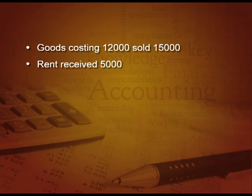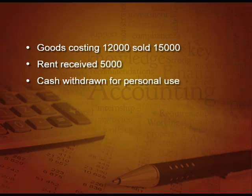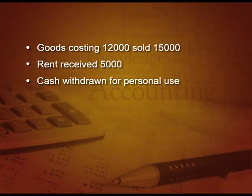Next, rent received 5,000: cash is increasing and rent received is income which increases capital. Next, cash withdrawn for personal use: cash comes down and because it is used for personal purpose, capital also gets reduced — cash minus, capital minus. Next, motorcycle for personal use: again it is for personal use so capital comes down and cash also goes down.